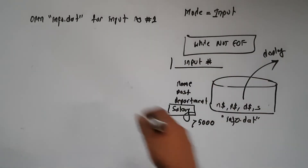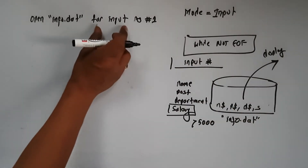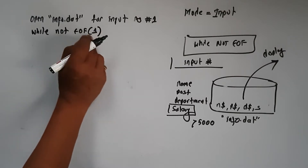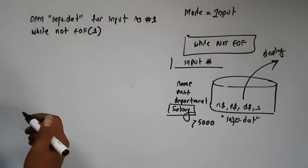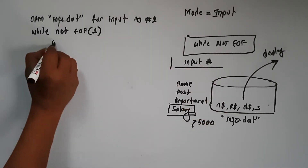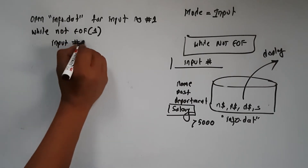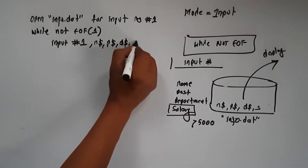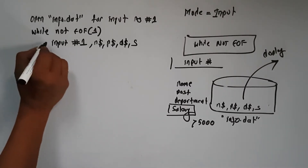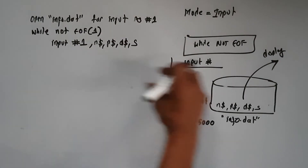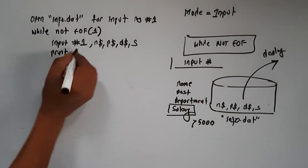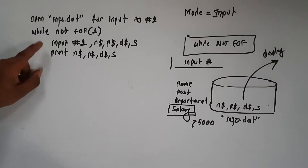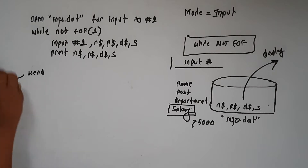So, how do we use INPUT#? The file number we call in brackets is 1. So, INPUT# 1 reads name, post, department, and salary. All of them are written in one set of records. Then we print and display all: N$, P$, D$, and S.